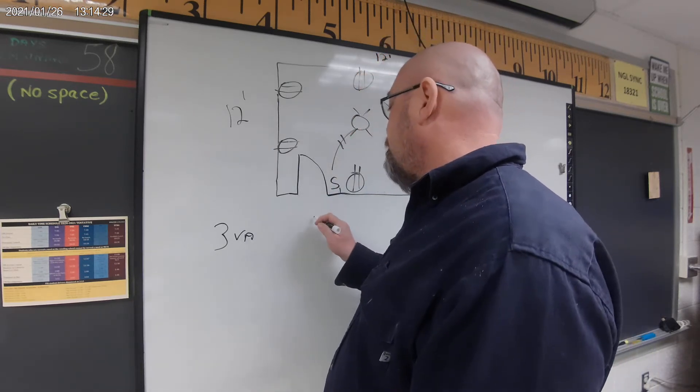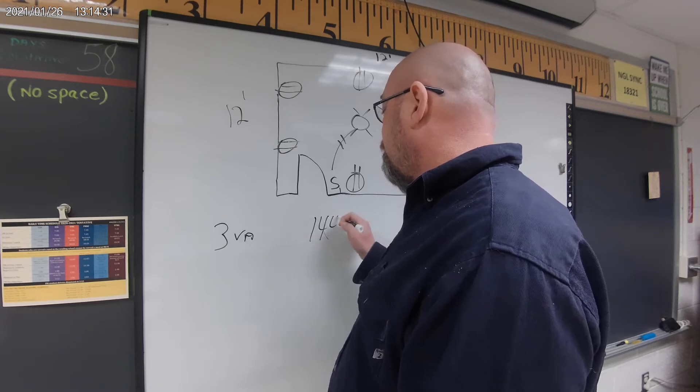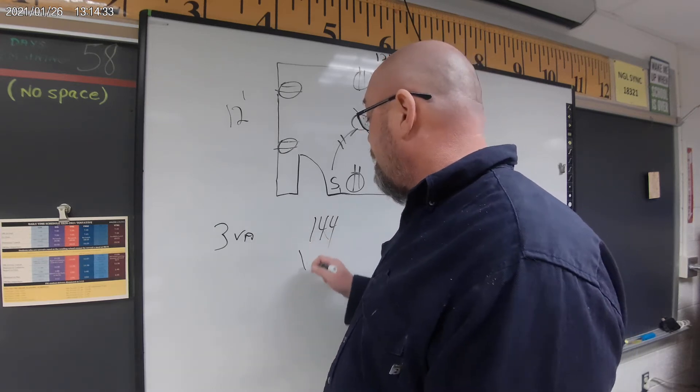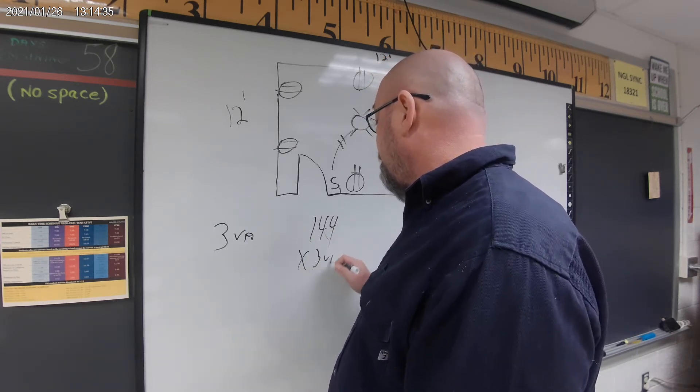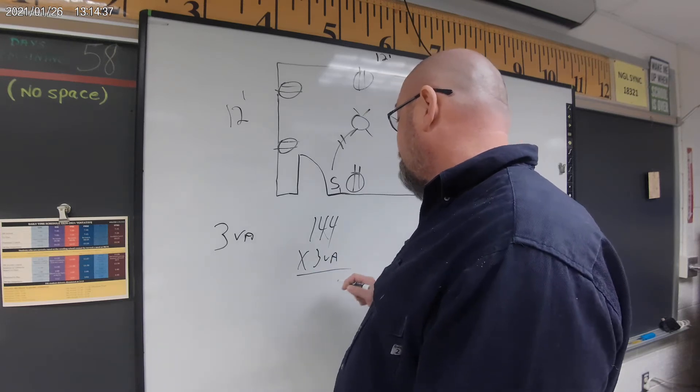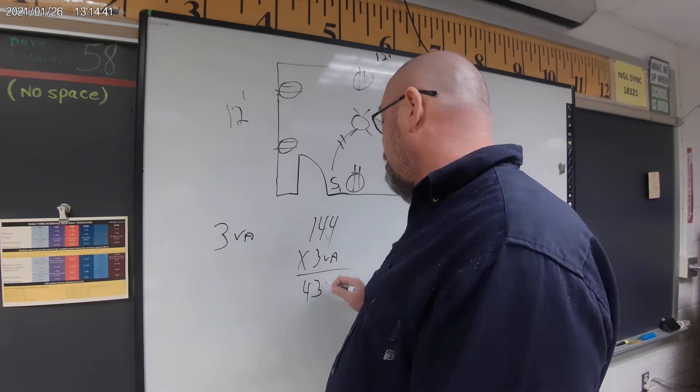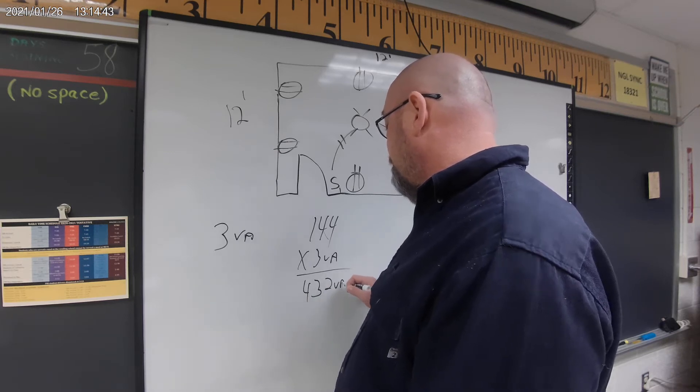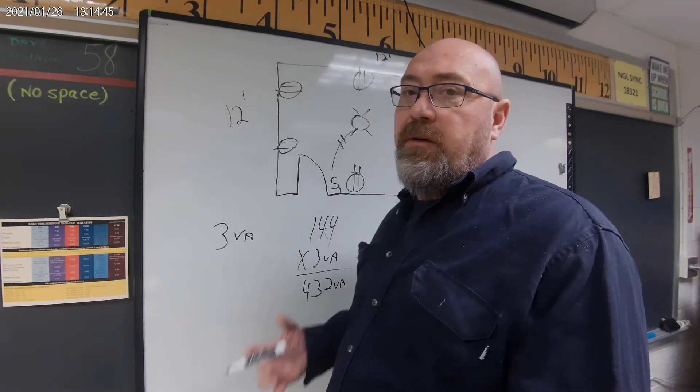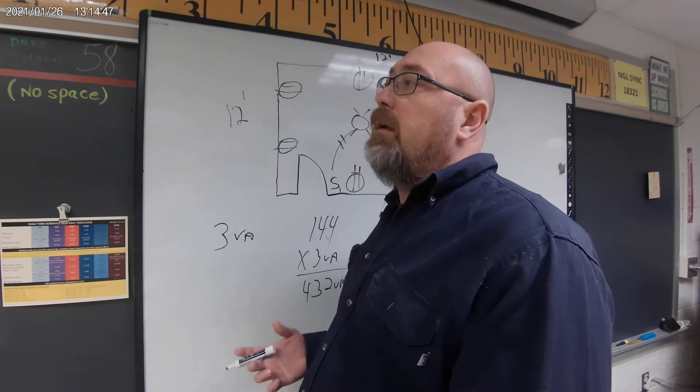That comes out to 144 square feet. I times that by my three volt amps, and that is going to come out to 432 volt amps. Now we want to calculate that into our amperage.